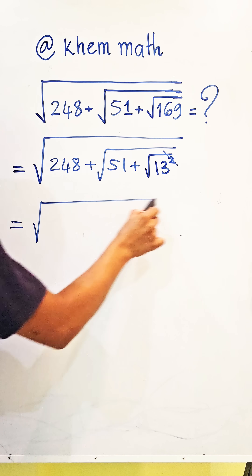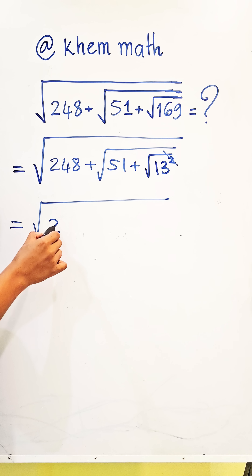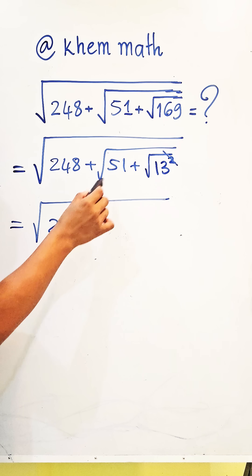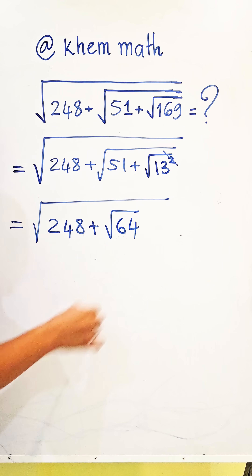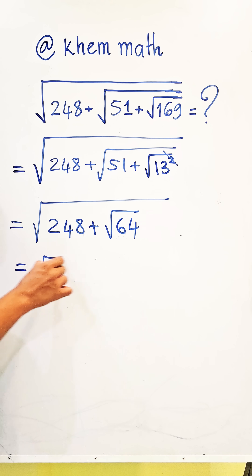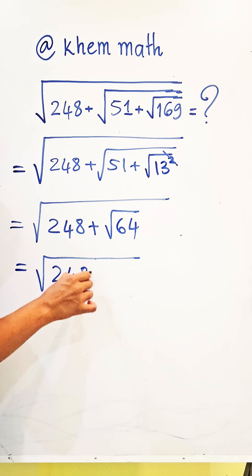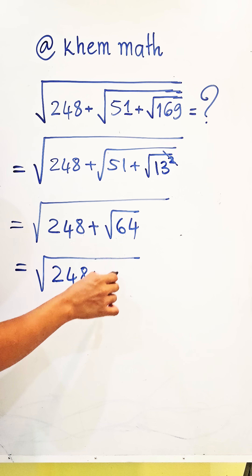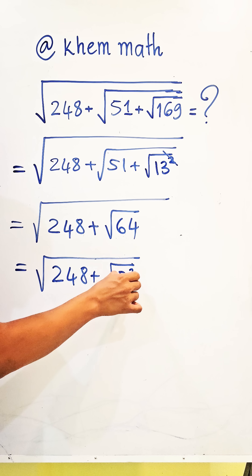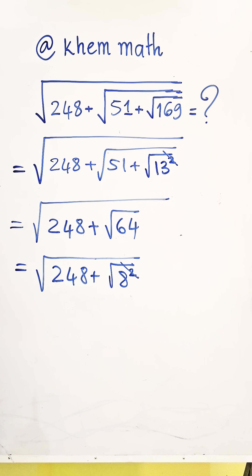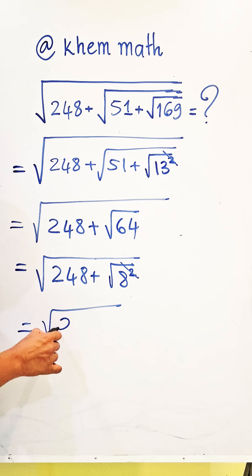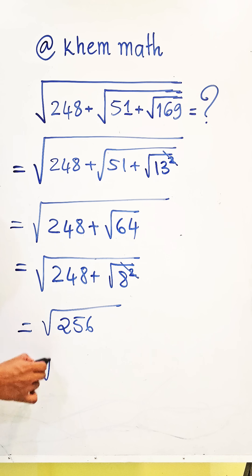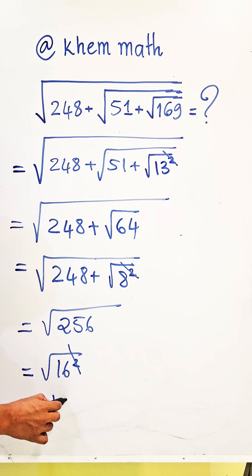We now have the square root of 248 plus the square root of 64. Since 64 equals 8 squared, the square root of 64 equals 8. Then 248 plus 8 equals 256, and 256 equals 16 squared. Simplifying the square root of 16 squared gives us the final answer of 16.